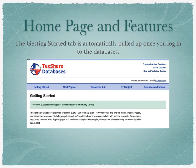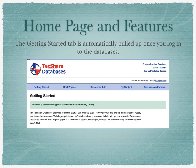Once you successfully log in, you are taken to the Getting Started tab. There is also information about how the databases provide access to over 27,000 journals, over 171,000 ebooks, and over 15 million images, videos, and interactive resources. The database recommends that if you're searching for general information, you stay on this page or go to the Most Popular page.